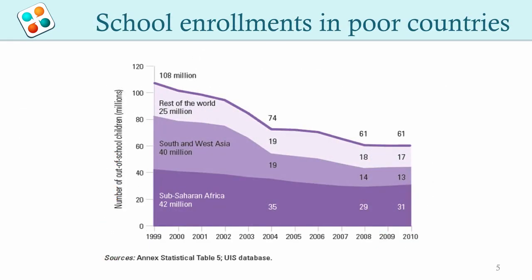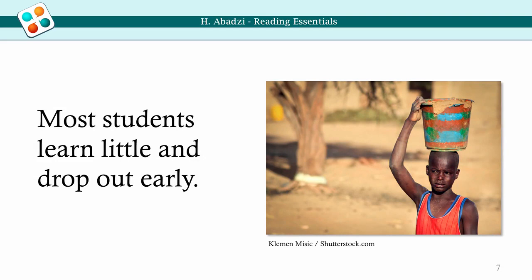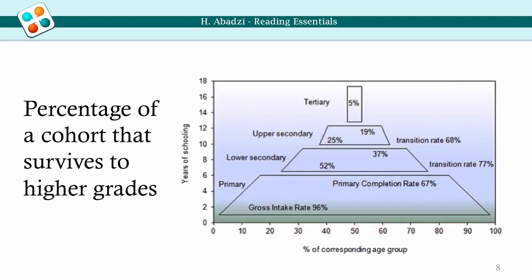A graph from a 2012 UNESCO Global Monitoring Report (GMR) shows rapid progress in getting kids into school between 1999 and around 2004. Opening access has been effective and enrollments in the lowest-income countries increased. However, since about 2004 enrollment progress has slowed down and almost come to a standstill. Even when students manage to continue going to school, only the most gifted or the well-to-do will manage to learn. Many of those who stay on and graduate remain illiterate.